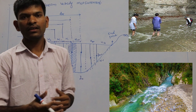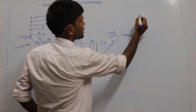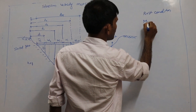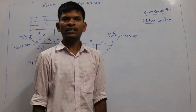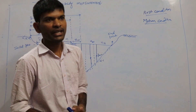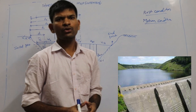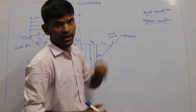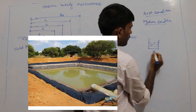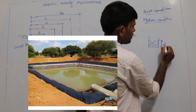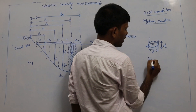Water measurement can be done with two methods: one is resting condition and another is motion condition. Resting condition means the water is at rest or in a stable condition, like in your pond, reservoir, or lake. Here we measure only the volume of water when you know the area and depth of that particular body.